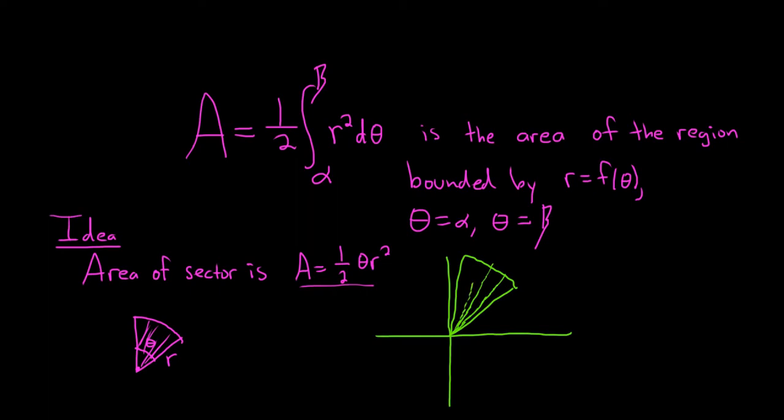And so what we do is we break it up into lots of little sectors like this. It's like we're taking a piece of pizza and cutting it up into little thin pieces. So you could think of these little angles here as delta theta. And so you have infinitely many of these, basically, and that turns into a definite integral.